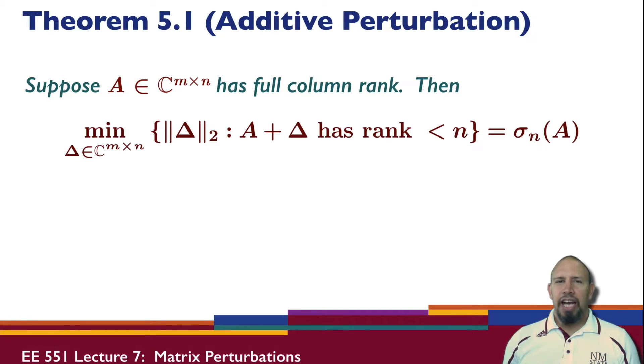All right, so the text basically has this theorem. Suppose A is a complex matrix with full rank. Then the minimum, if we minimize over all deltas, complex matrices, if we minimize the two norm, so that's what the statement is saying. We minimize the two norm of the delta such that A plus delta has rank less than N. So remember it has full column rank, which means it has rank N. And so now this quantity A plus delta has rank less than N. We can go through and show that this minimization is actually, we actually can get a direct expression for it and it is the smallest non-zero singular value of A.